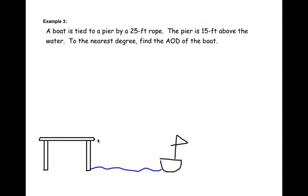Example number three. You have a boat tied to the pier by a 25-foot rope — from the pier to the boat, that rope is 25 feet. The pier is also 15 feet above the water. We have just created a right triangle. To the nearest degree, find the angle of depression of the boat — we want to find this angle here.